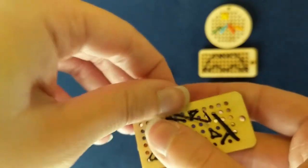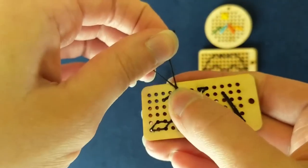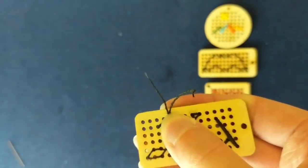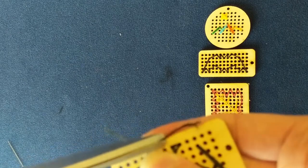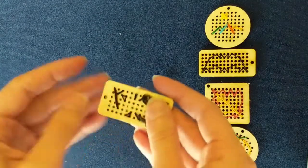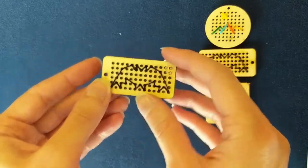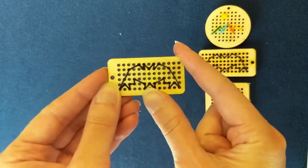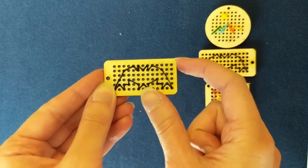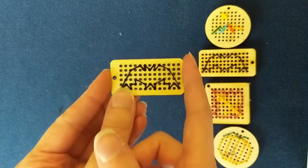And then once you've done that, you're just going to snip off these little excess threads. And once you have finished snipping off your thread, just flip it over and you will have your finished design. And now it's good for you to use it as a keychain or a necklace or however you'd like to use it.